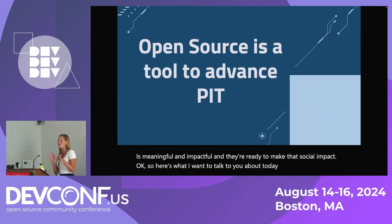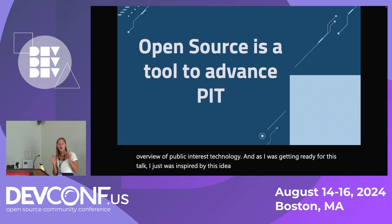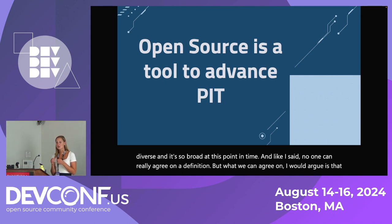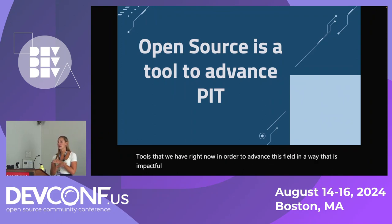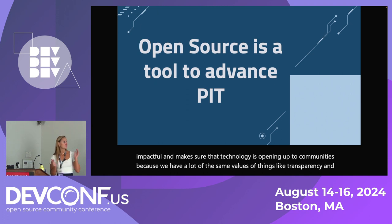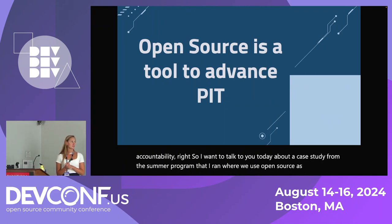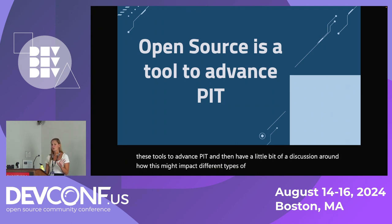So here's what I want to talk about today. As I was getting ready for this talk, I was inspired by the idea that open source is a tool to advance Public Interest Technology. The field of PIT is so diverse and broad, and no one can agree on a definition. But what we can agree on is that open source is actually one of the best tools we have right now to advance this field in an impactful way — it opens up technology to communities because we share many of the same values like transparency and accountability. I want to talk about a case study from a summer program where we used open source to advance PIT.